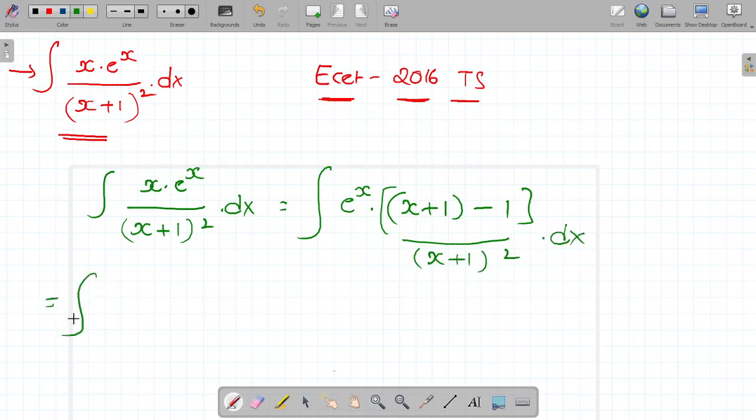So the next step is integral of e power x, x plus 1 by x plus 1 whole square minus 1 by x plus 1 whole square into dx.